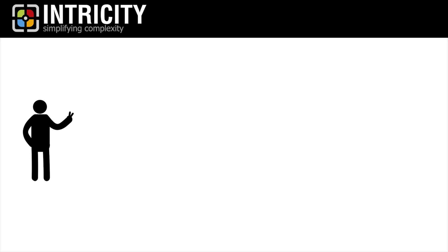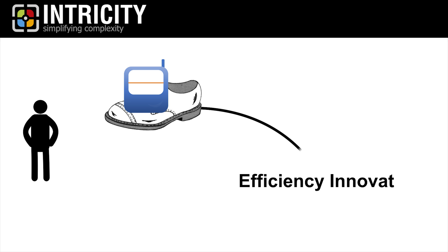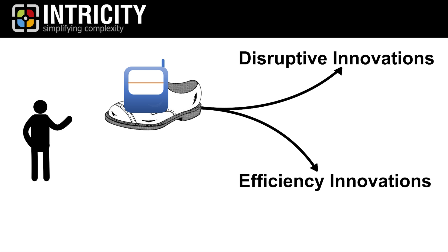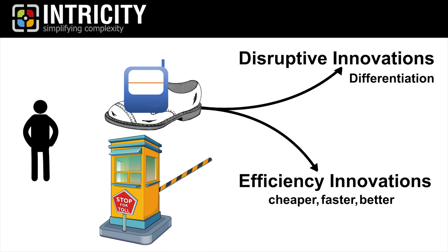Number two, before you start development, be sure to appropriately identify the efficiency innovation and or the disruptive innovation in detail. Efficiency innovations should be able to answer the cheaper, faster, better benefits, and disruptive innovation should be able to answer your product differentiation opportunities. You really shouldn't even start your IoT project without a well-defined strategy and its bridge to its tactical deployment.